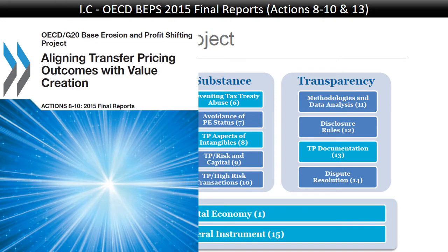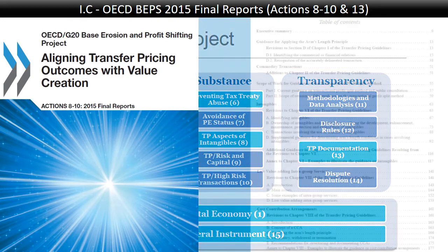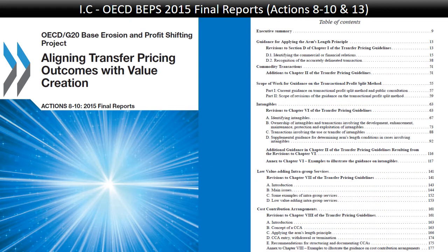Let us look at BEPS Actions 8 to 10 and then Action 13. This is the final report and, as you can see from the table of contents, it first gives guidance on the arm's length principle and how to apply it. It changed Chapter 1 significantly — replacing the old functional analysis with identifying the commercial and financial relations between the parties, focusing heavily on risk. The party said to carry the risk must be able to control that risk.